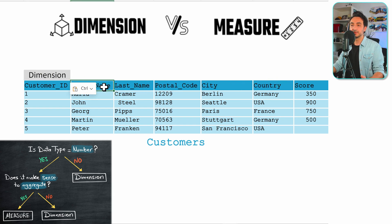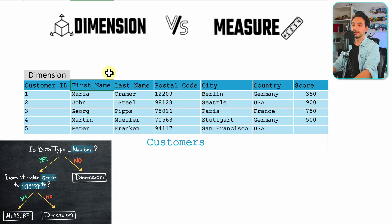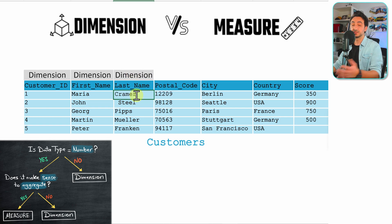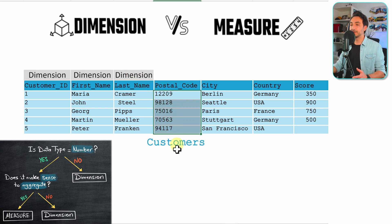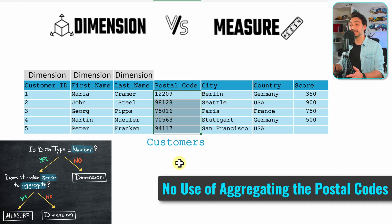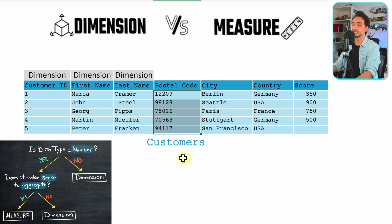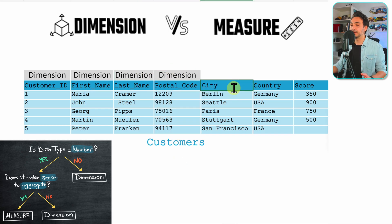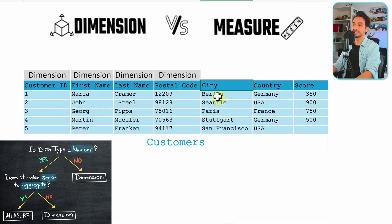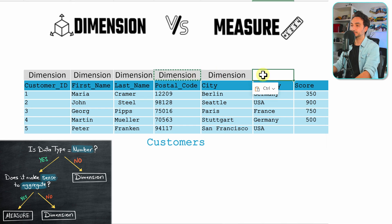The next field is easier — first name is not numeric, so it's automatically a dimension. The same goes for last name. Now the postcode or zip code is a number, but does it make sense to find the sum or average of a postcode? No — so even though it's a number, it is a dimension. City and country are both strings, non-numeric, so they are automatically dimensions.